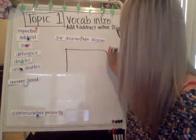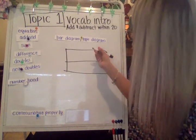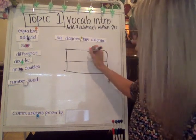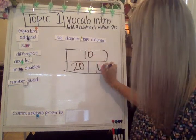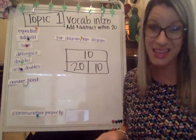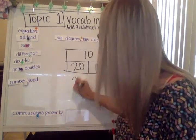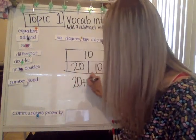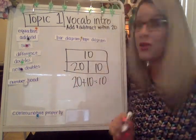You would not want to put — here's a non-example — you wouldn't want to put a 10 here, a 20, and a 10 together.